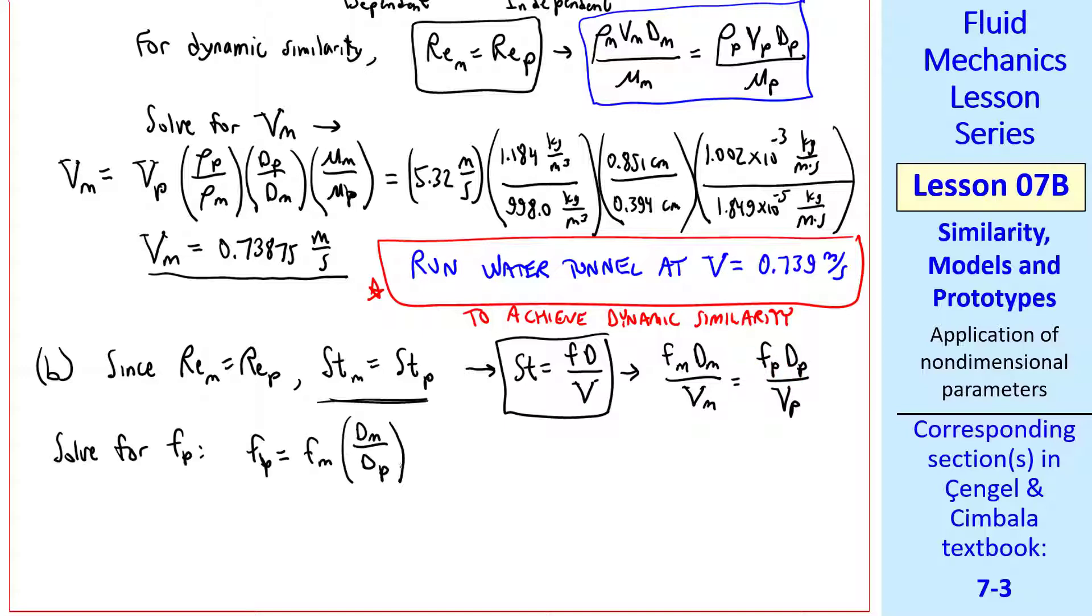We know everything here now except fp. Again, using ratios, fp equal fm times dm over dp times vp over vm. Again, we plug in all the numbers where fm was measured as 38.1 hertz. And I'm not going to write out the diameter or speed ratios. I'll just give you the final result. To three digits, fp is 127 hertz.